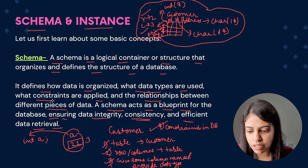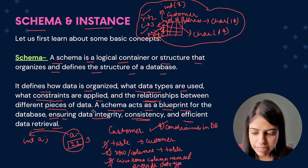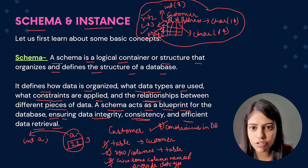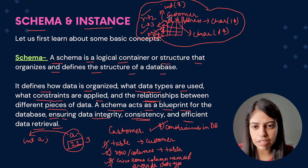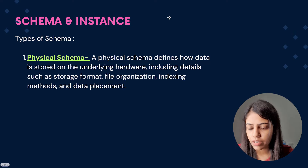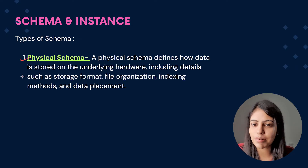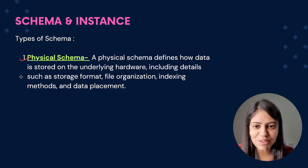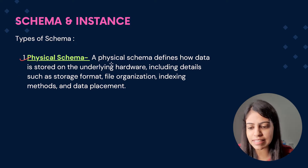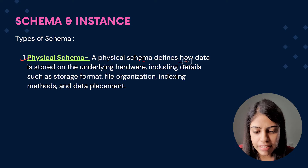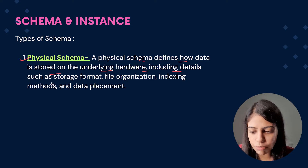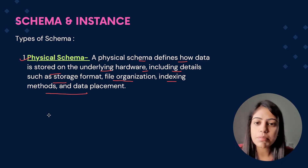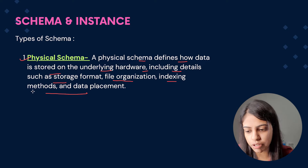We have defined the data types, the constraints, and the relationships between different pieces of data — this is called schema. Now there are various types of schema. The first type is called physical schema. In the last set of videos we discussed about physical level in abstraction, and it is kind of similar to that. In a physical schema, it defines how the data is stored on the underlying hardware, including details such as storage format, file organization, indexing methods, and data placement.